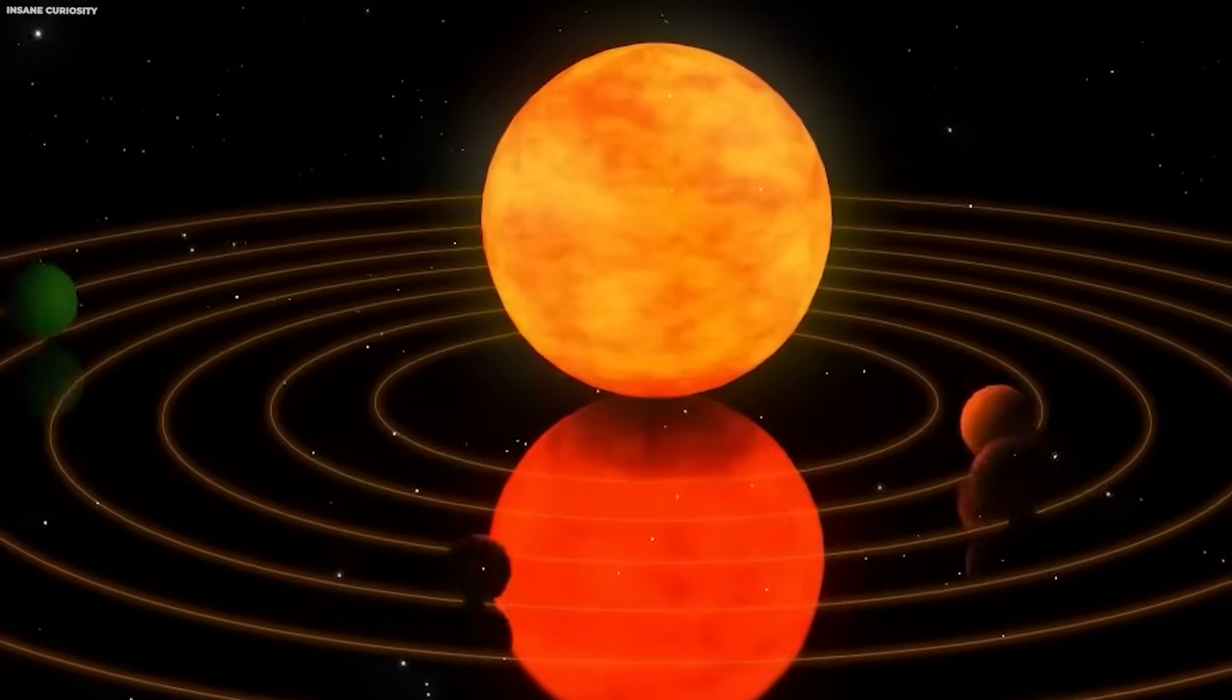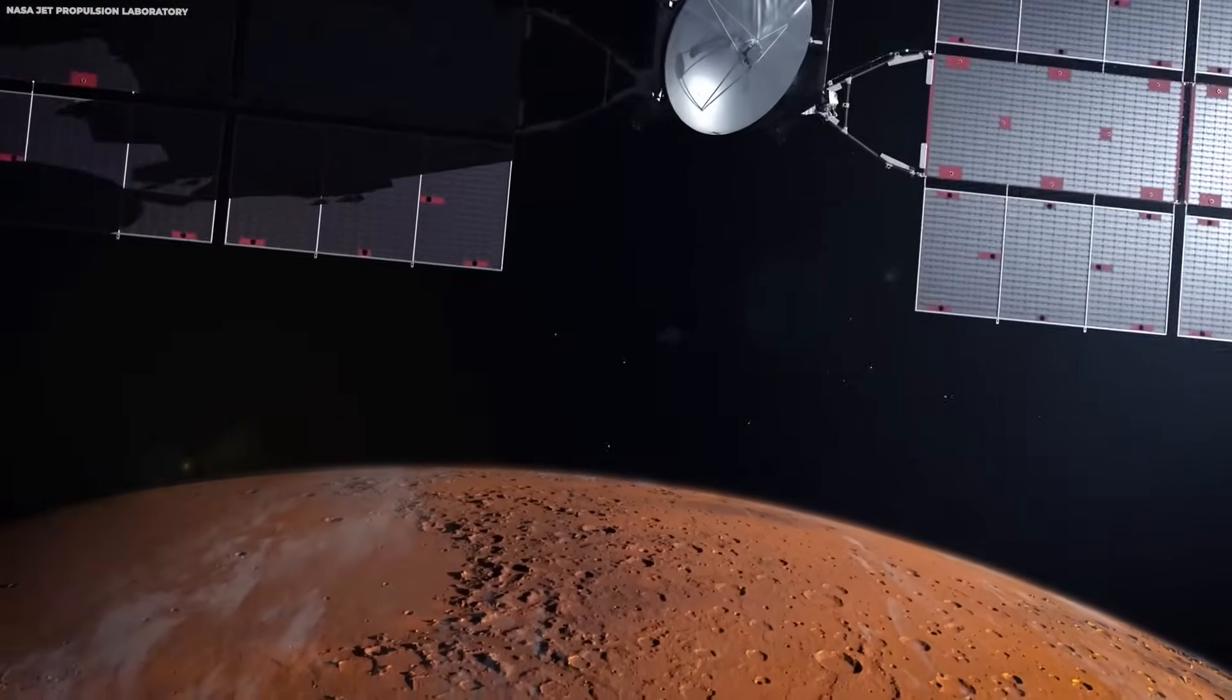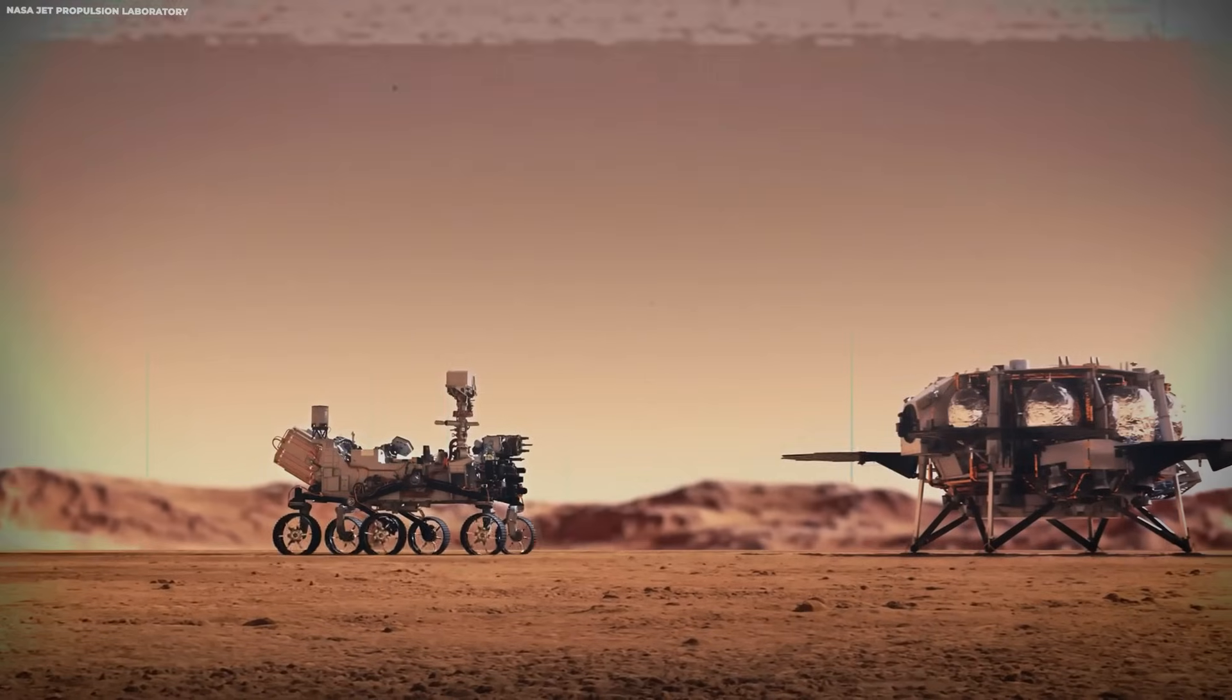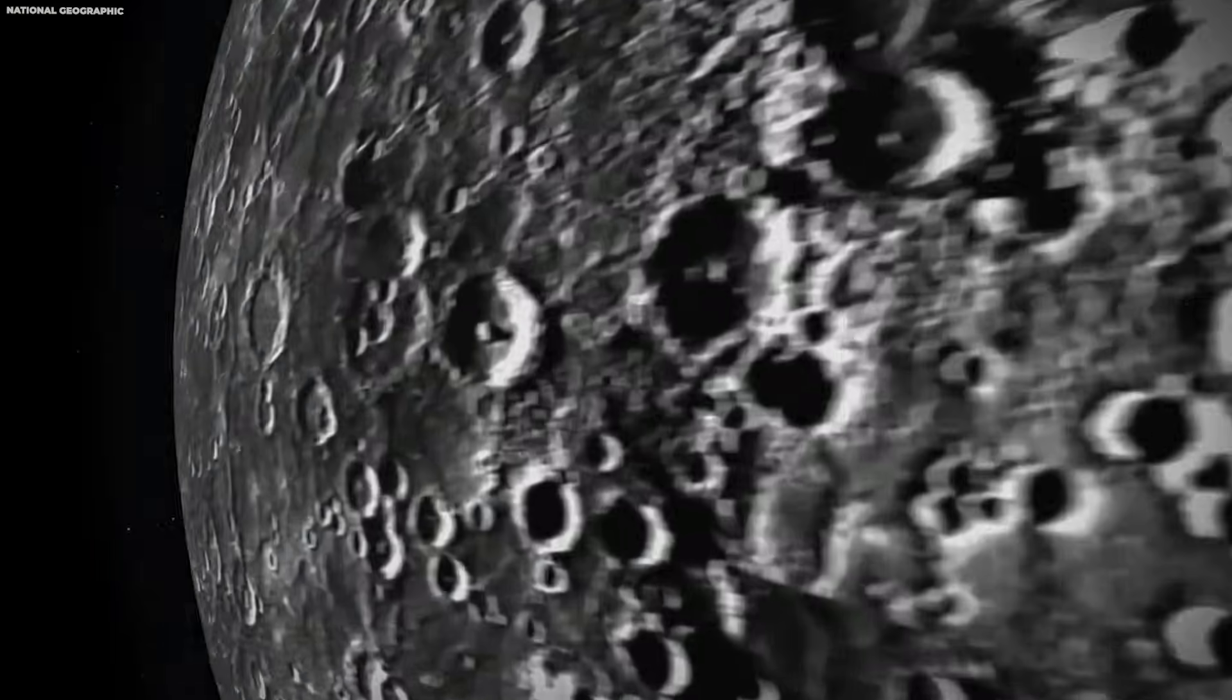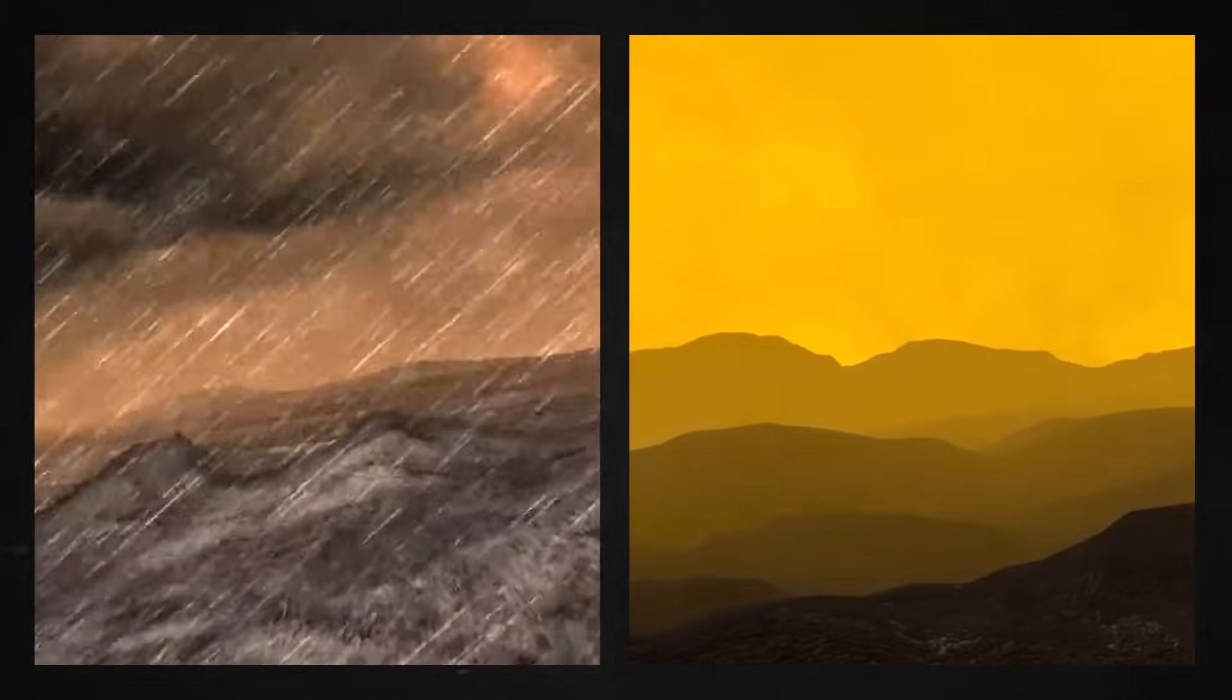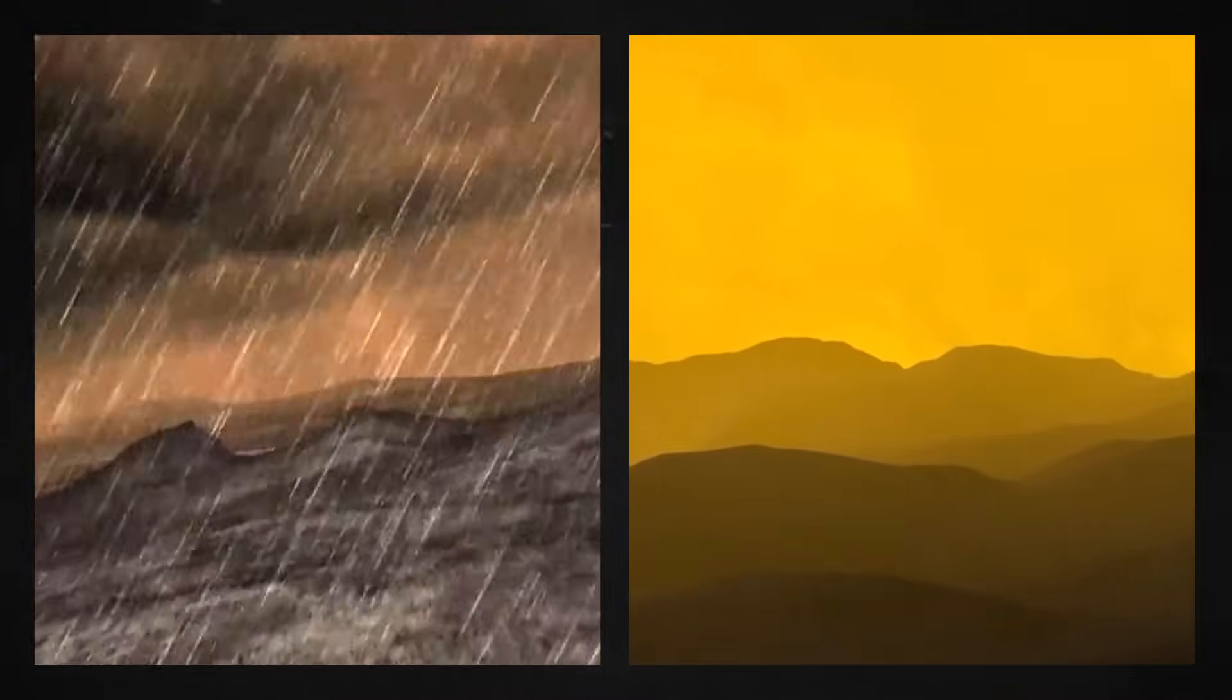From orbit and with the help of many landers and rovers, Mars's rocky topography has been mapped and photographed in more detail than any other rocky planet in the solar system. Even Mercury has been mapped and imaged to a respectable degree, but there aren't many pictures of Venus's surface and none have been taken in more than 40 years.